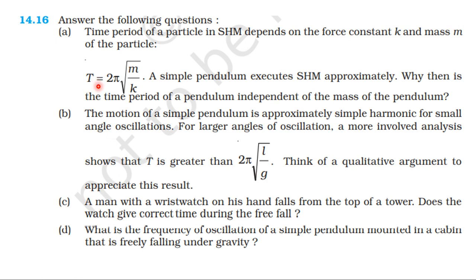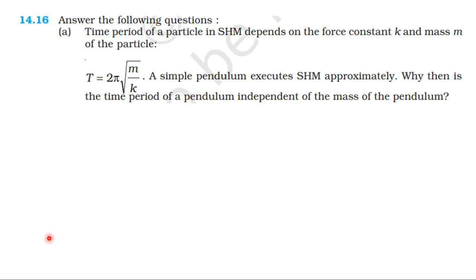From the NCRT textbook, topic oscillations, question 14.16. Time period of a particle in simple harmonic motion depends on the force constant k and mass m of the particle. T equals 2π root of m by k.